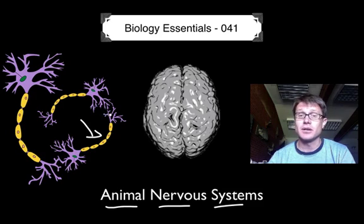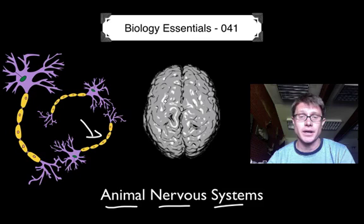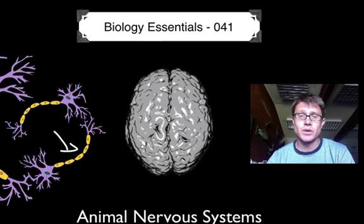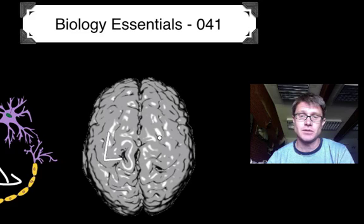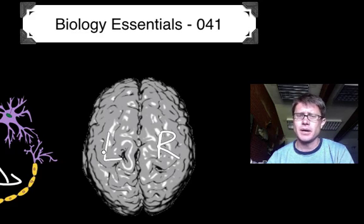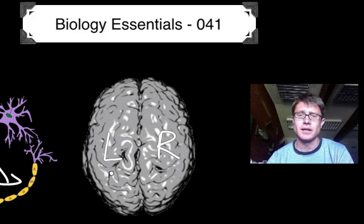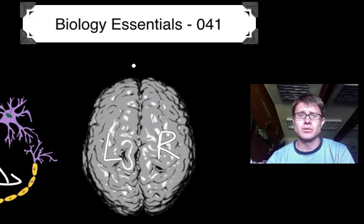I want to start with big picture, and nothing gets more big picture in the nervous system than the brain. This is what your brain looks like from above. It has two different hemispheres — a left hemisphere and a right hemisphere. Certain things like speech are clearly centered on the left side, and your handedness has to do with which of these is dominant.